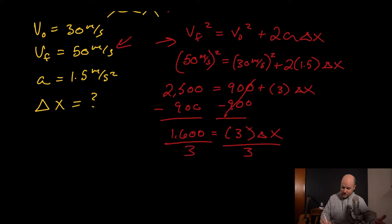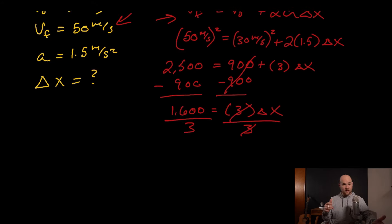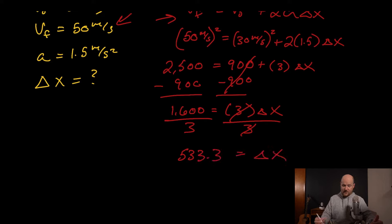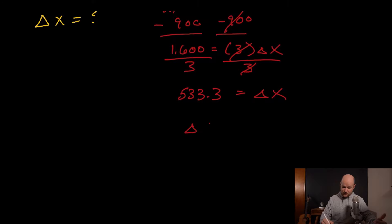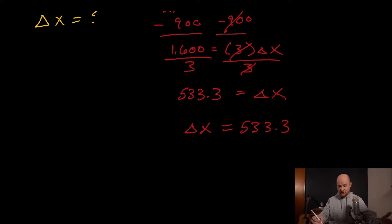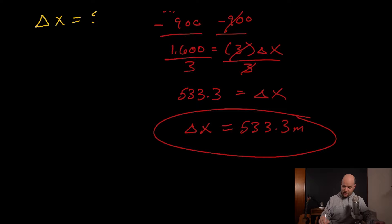Finally, we Solve: dividing both sides by 3, we get Δx = 1600 ÷ 3 ≈ 533.3 meters. Don't forget units — change in position is measured in meters. So the car traveled approximately 533.3 meters during acceleration.